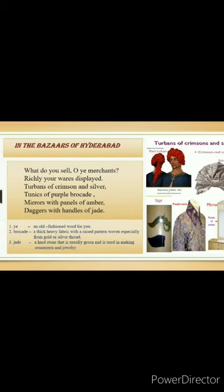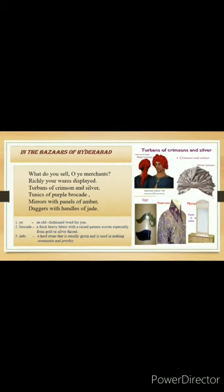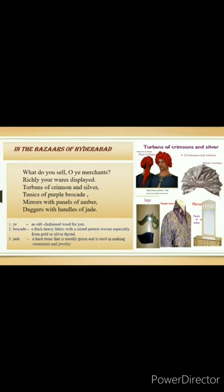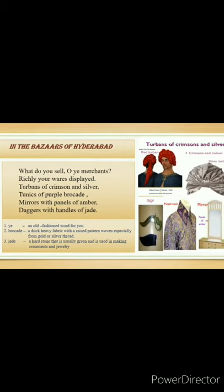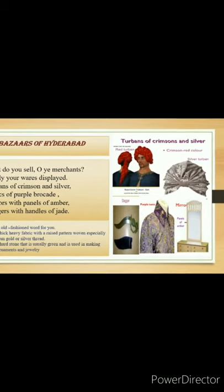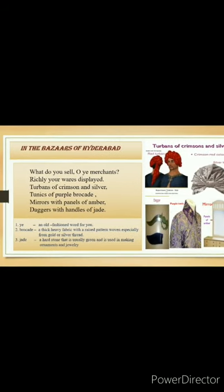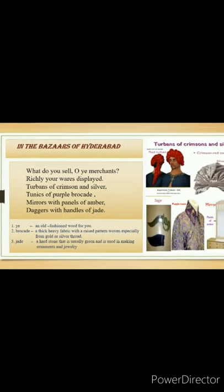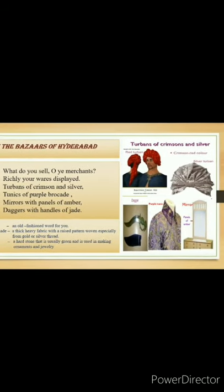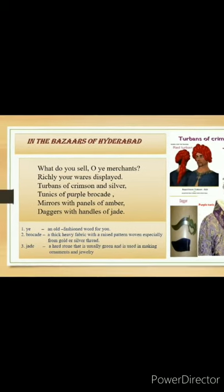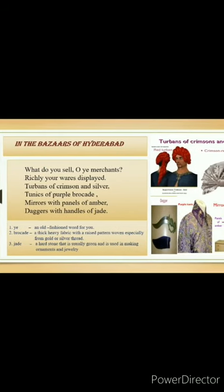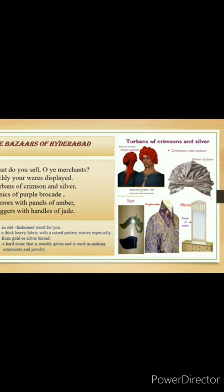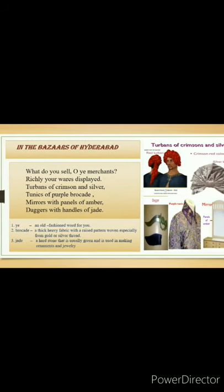What do you sell, O merchants? Richly your wares are displaying. Turbans of crimson and silver, tunics of purple brocade, mirrors with panels of amber, daggers with handles of jade. Here, the poem begins with the poet's question to the merchants about what they are selling. She sees that the goods are displayed nicely to attract the buyers. The merchants replied that they are selling crimson and silver colored turbans, purple brocade tunics, mirrors with amber frame and daggers with handles made of jade.